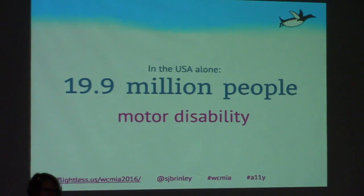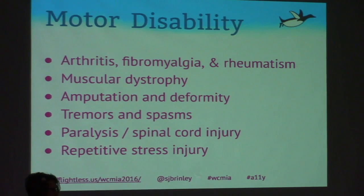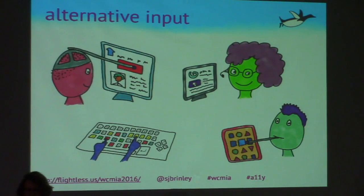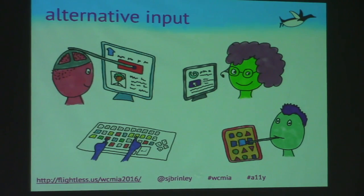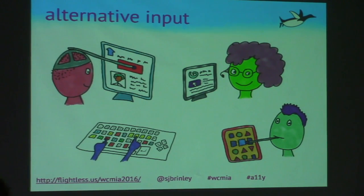Motor disabilities: 19.9 million people in the U.S. have motor disabilities. Some causes include arthritis, fibromyalgia, rheumatism, muscular dystrophy, amputation and deformity, tremors and spasms, paralysis, spinal cord injury, and repetitive stress injury. Many of these people use alternative inputs such as a head-mounted stylus, eye-movement sensors like Stephen Hawking's, larger simplified keyboards, or mouth-operated styluses.